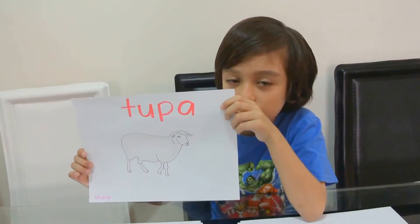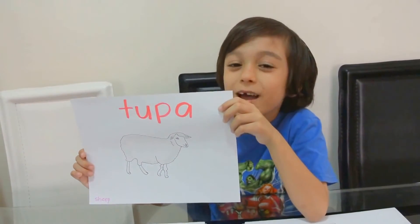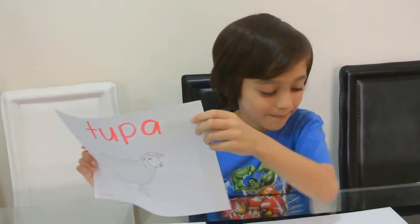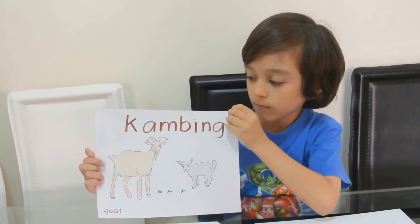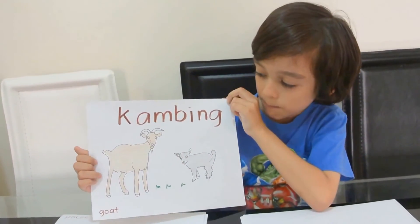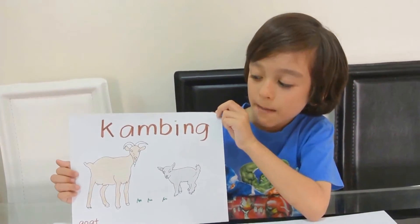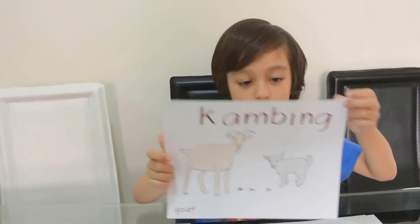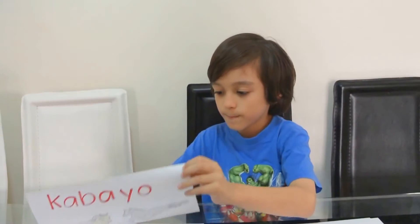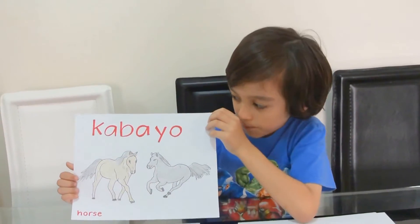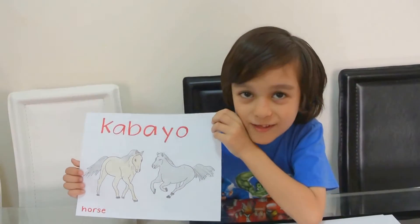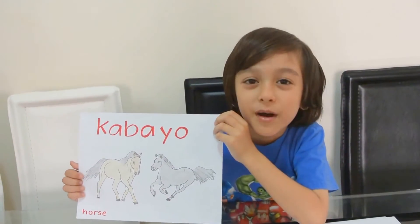Tupac is sheep. Tupac. Cambing is goat. Cambing. Caballo is horse. Caballo.